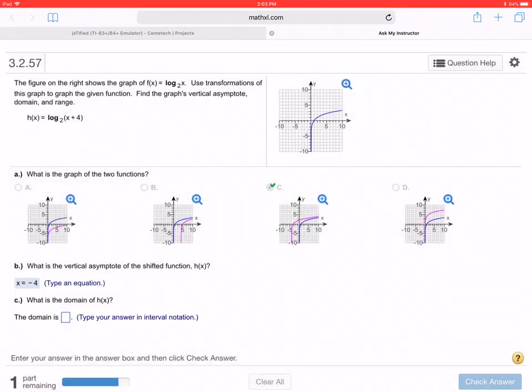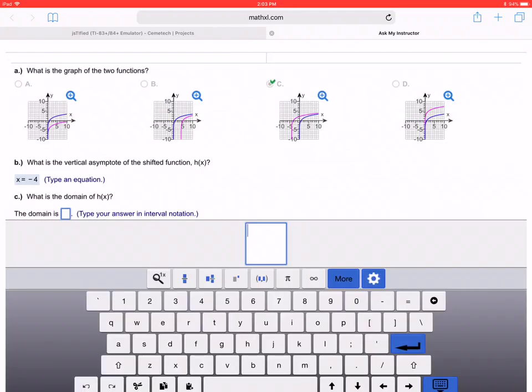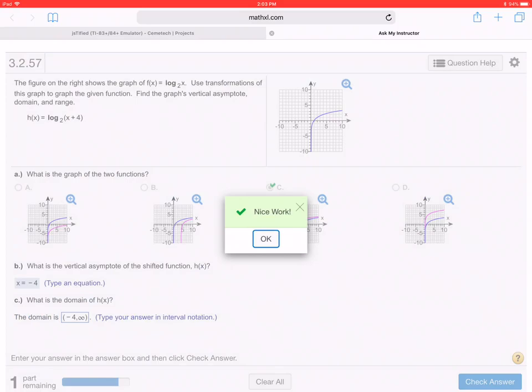The domain we said from, so we want to do parentheses, we said negative 4 up to infinity. Cool, that looks good. Enter, fantastic.